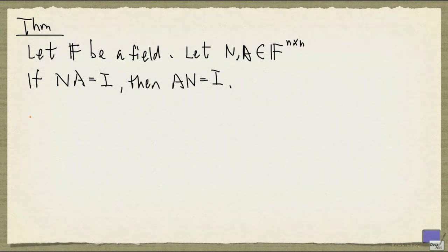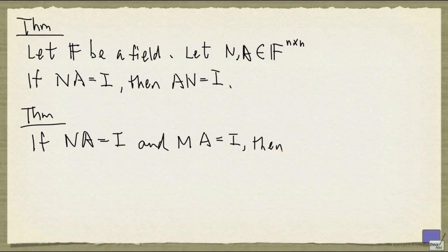So let's see what the consequence of this is. Now the first is, if you have two left inverses, then in fact they must be equal. So if N times A is I, and M times A is I, then N is equal to M.